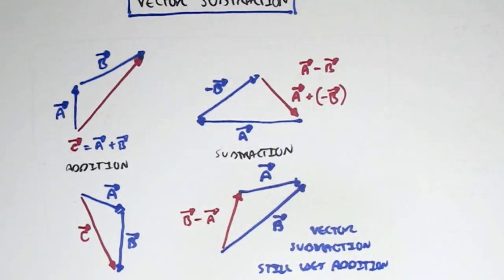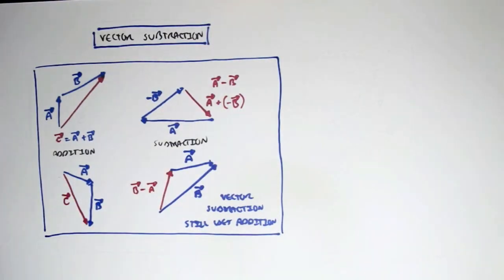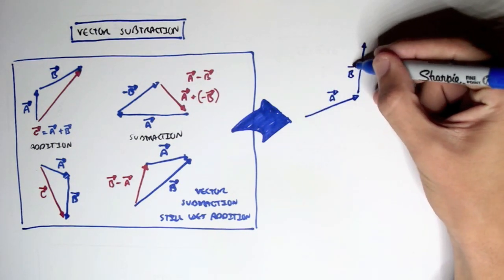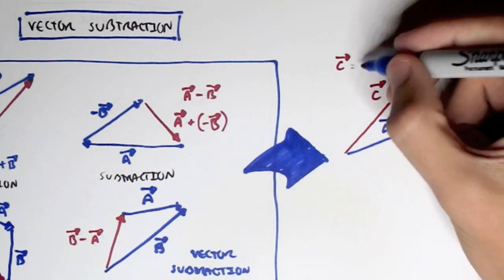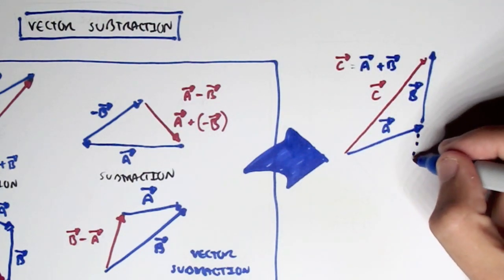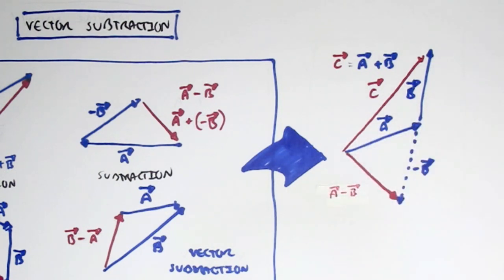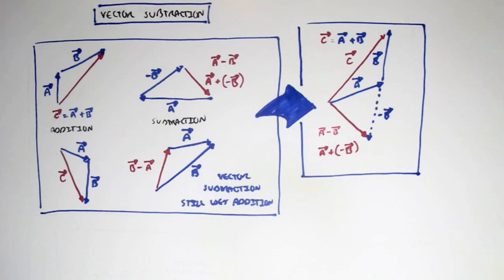Another subtraction example: if we have displacement a here and b displacement travelling the same direction, the red displacement will be negative b minus a. In a clear example — here's displacement a and displacement b both travelling the same direction, so c equals a plus b (addition). However, if we flip the b displacement to get negative b, the new red displacement is a displacement minus b displacement, or a plus negative b. Vector subtraction still uses vector addition, but with a minus sign.